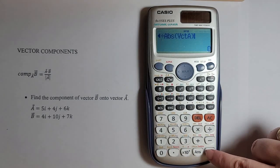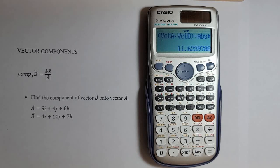And now I will just press equal. 11.62. That is our component of vector B along vector A.